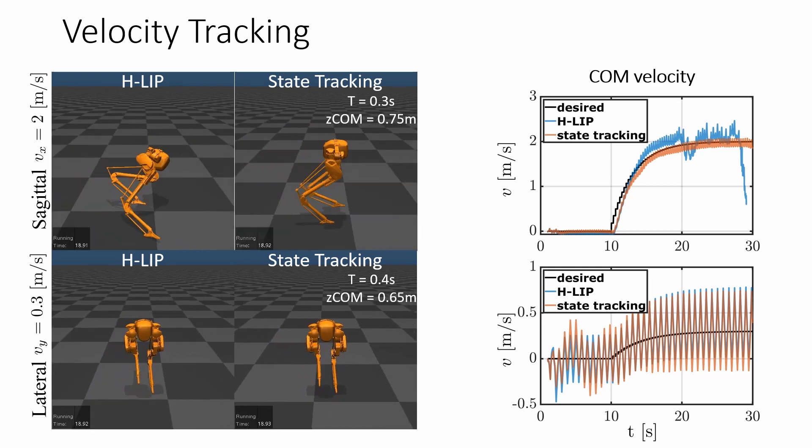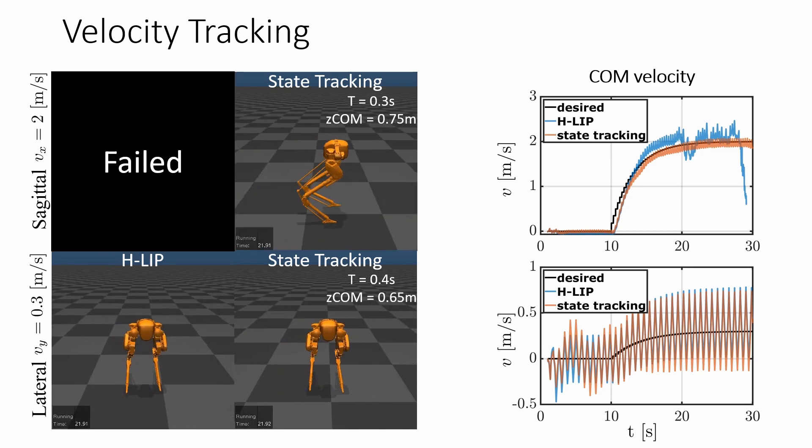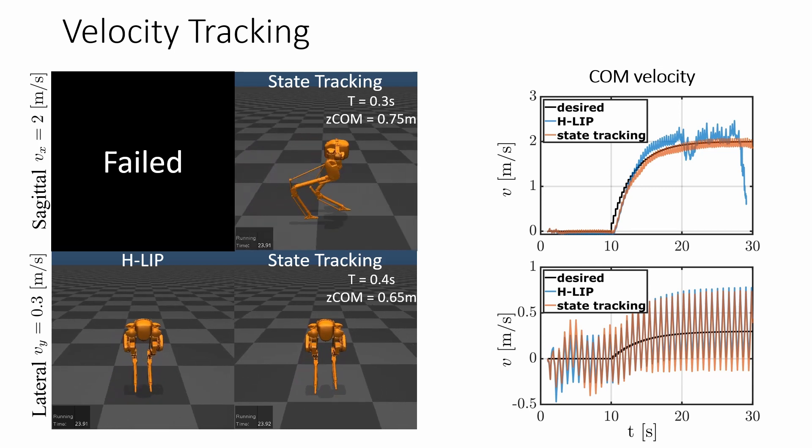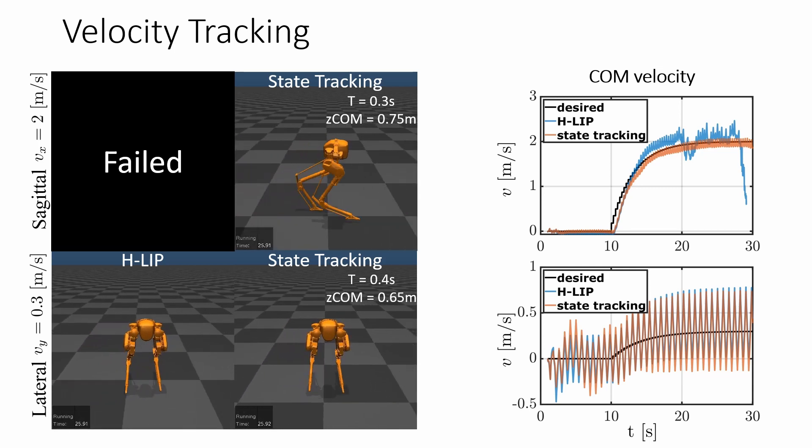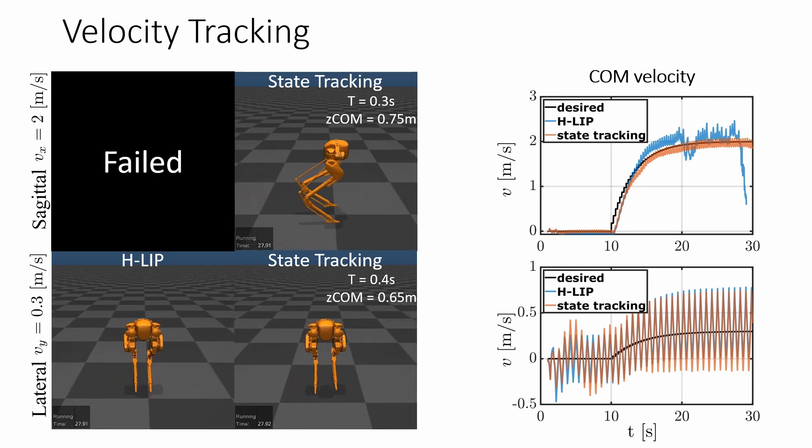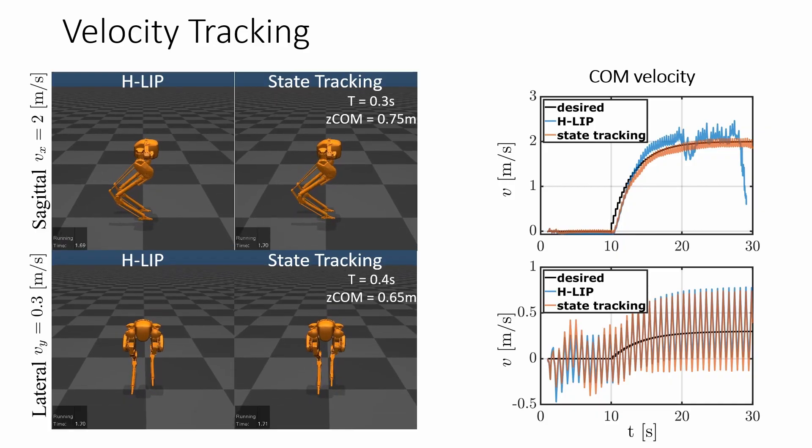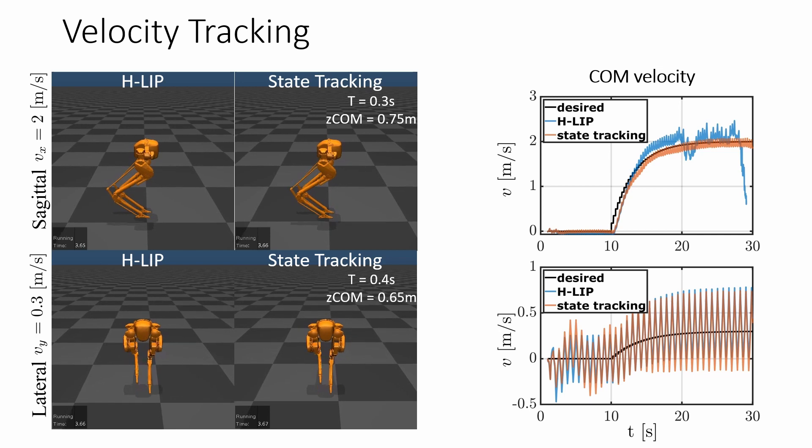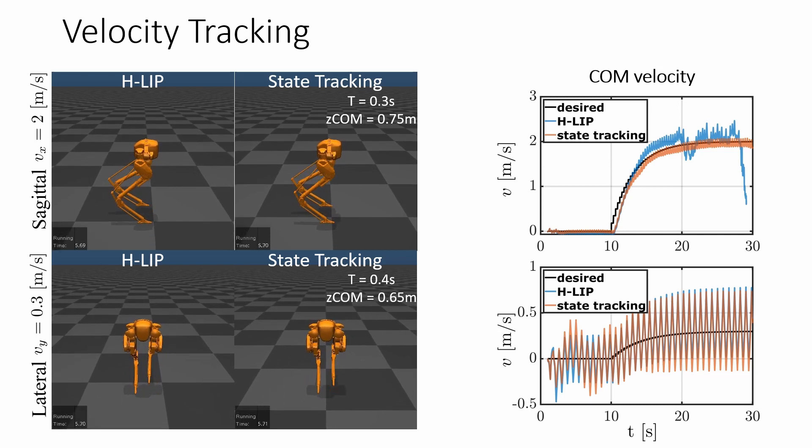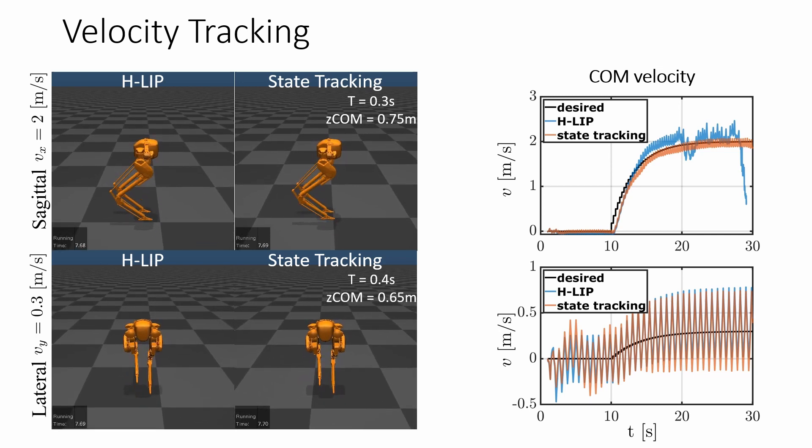With the baseline HLIP approach, we can see that the case with smaller step-time and a higher center of mass height at the top has much better tracking results. For the lateral tracking results on the bottom, even when sagittal plane is commanded to step in place, the robot has a noticeable backward velocity. With the state tracking adaptation, the velocity tracking performance is drastically improved.